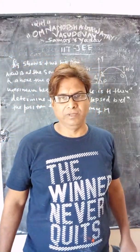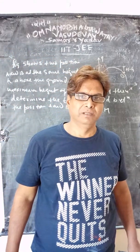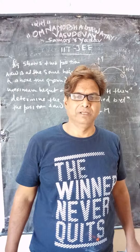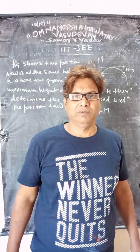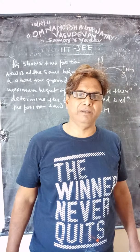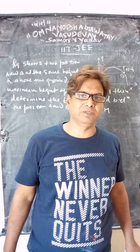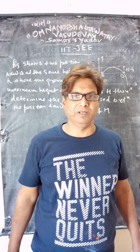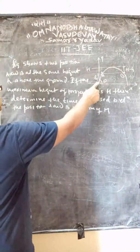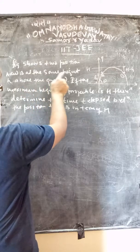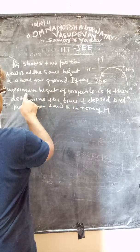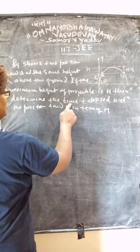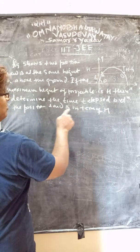Today we have to see a numerical based on projectile motion. Suppose a particle is projected with initial velocity V0 and attains maximum height. We have to find the positions A and B where the particle is at a small height h from the ground. As seen in the figure, two positions A and B are at the same height h above the ground. If the maximum height of the projectile is capital H, determine the time lapse between positions A and B in terms of capital H.